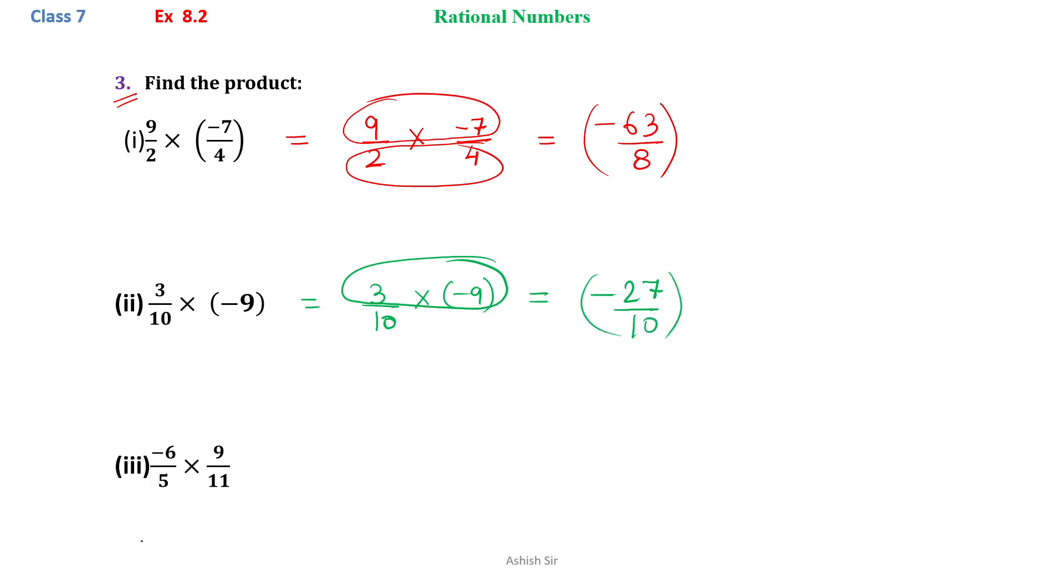Similarly, moving on to the next one, we have minus 6 by 5 multiply 9 by 11. So none of the numerator is divisible by denominator, so 6 nines are, we get 54, and 5 and 11 we multiply, we get 55, so our answer is minus 54 by 55.